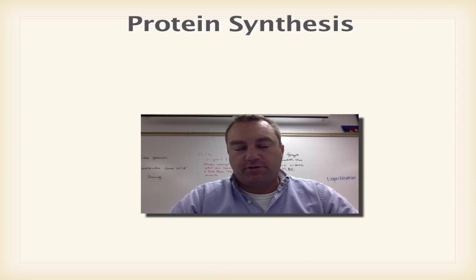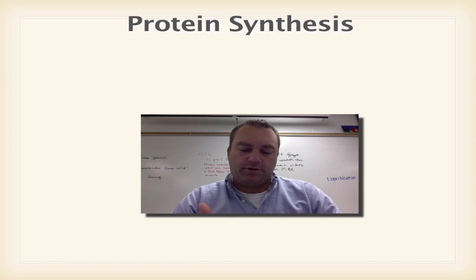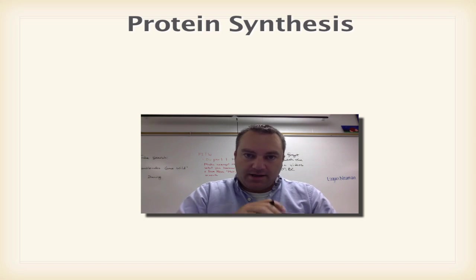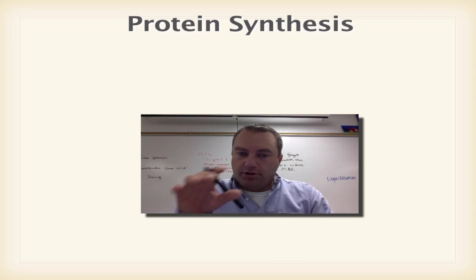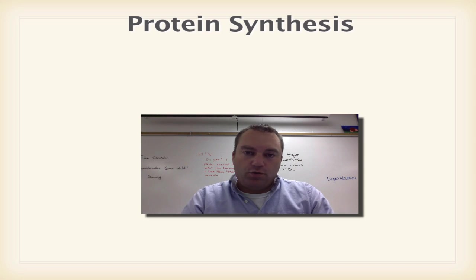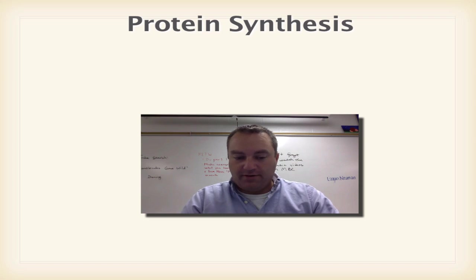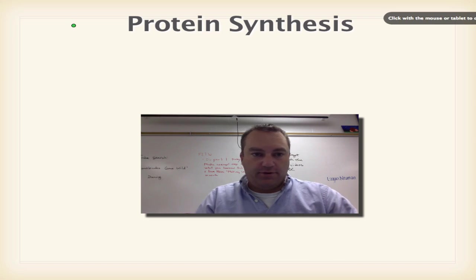Welcome to episode 4 from chapter 13 on RNA and protein synthesis. In this episode, we're going to go over the genetic code — in other words, how do we read the DNA bases and translate that into a protein? You're going to learn how to use the code wheel and be able to read codons and tell which amino acids they code for. But before we begin, we'll do a quick review.